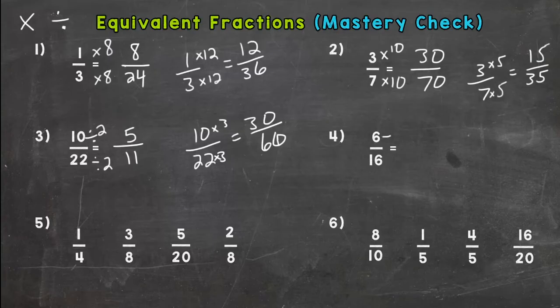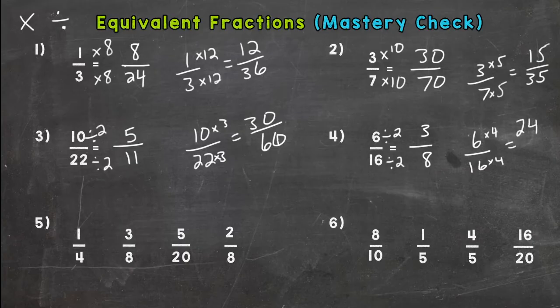And then number four, both of those are even. So I know I can divide by two and get 3/8ths. Or let's multiply them both by four. And we will get 24 over 64.